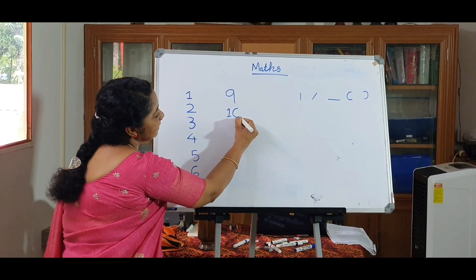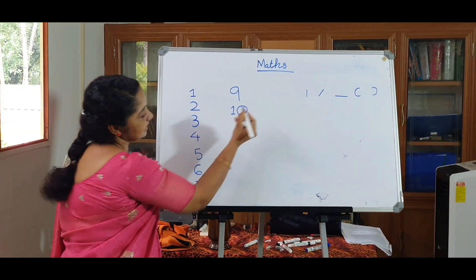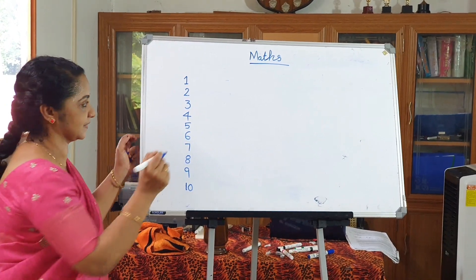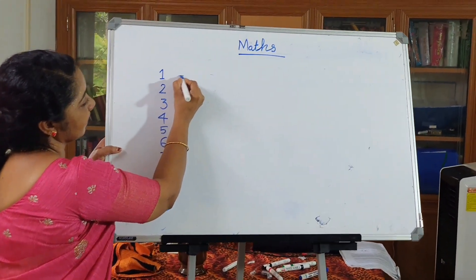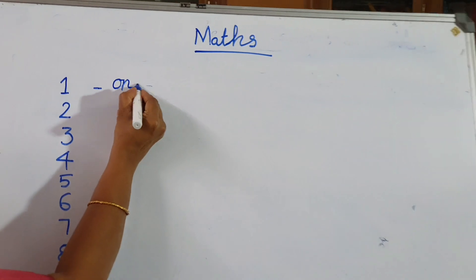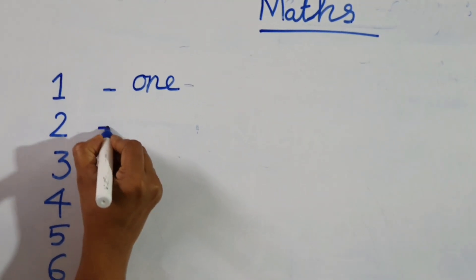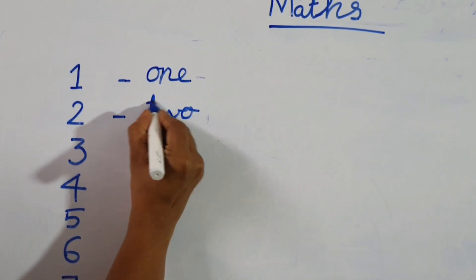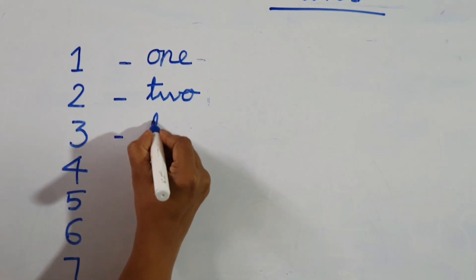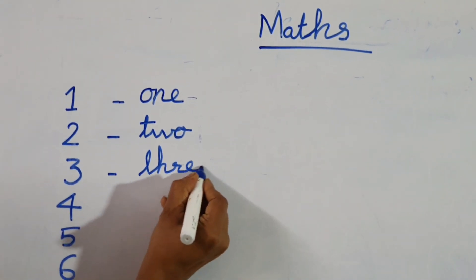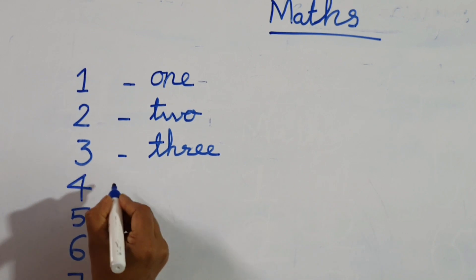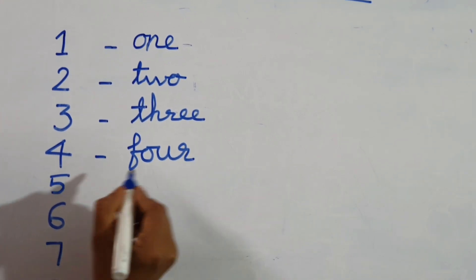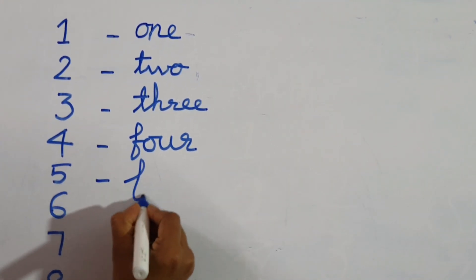And ten — we already learned one, and for zero, writing a curve that joins — a curve. So this is ten. Now we are going to learn number names. O-N-E: one.